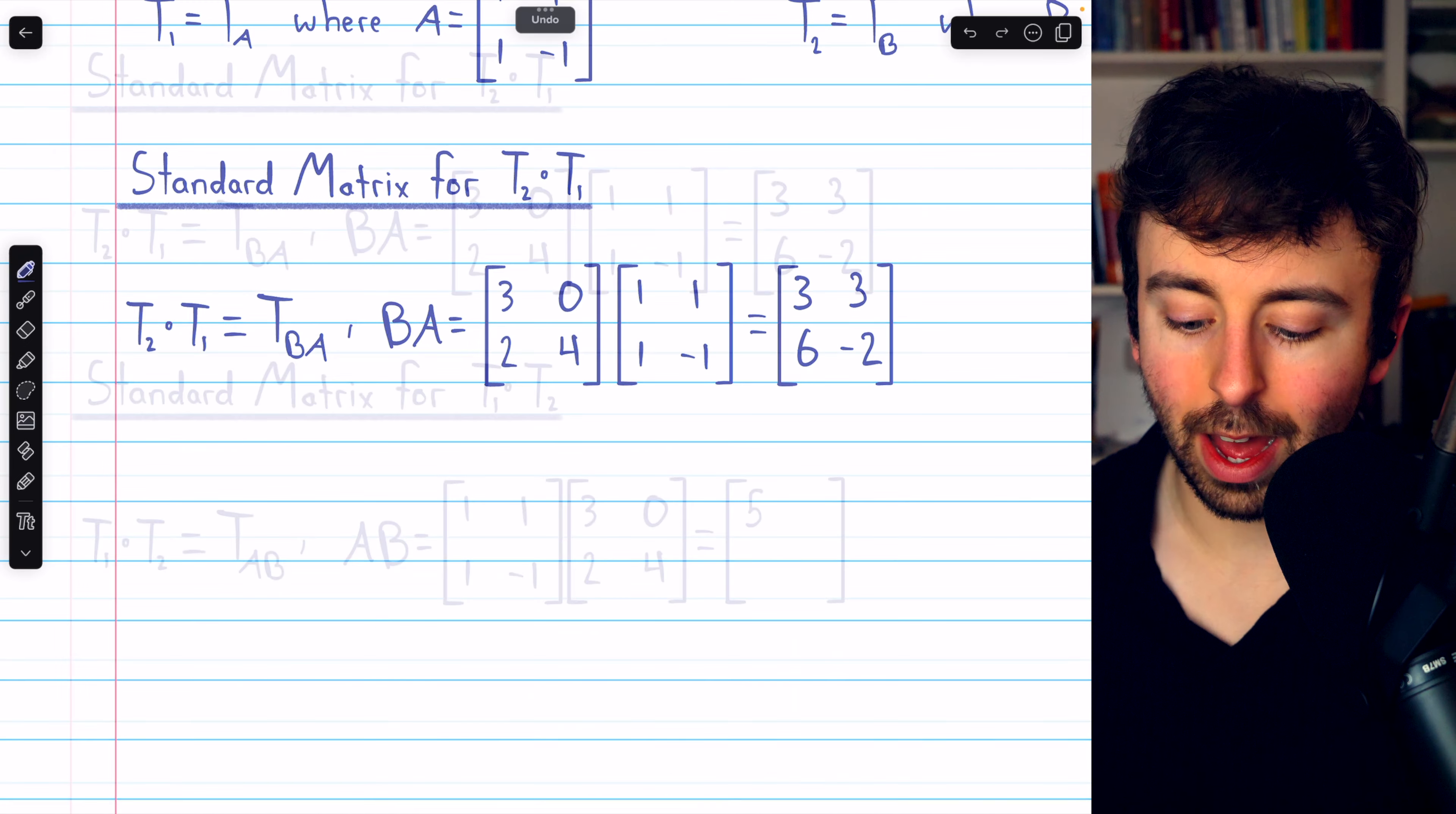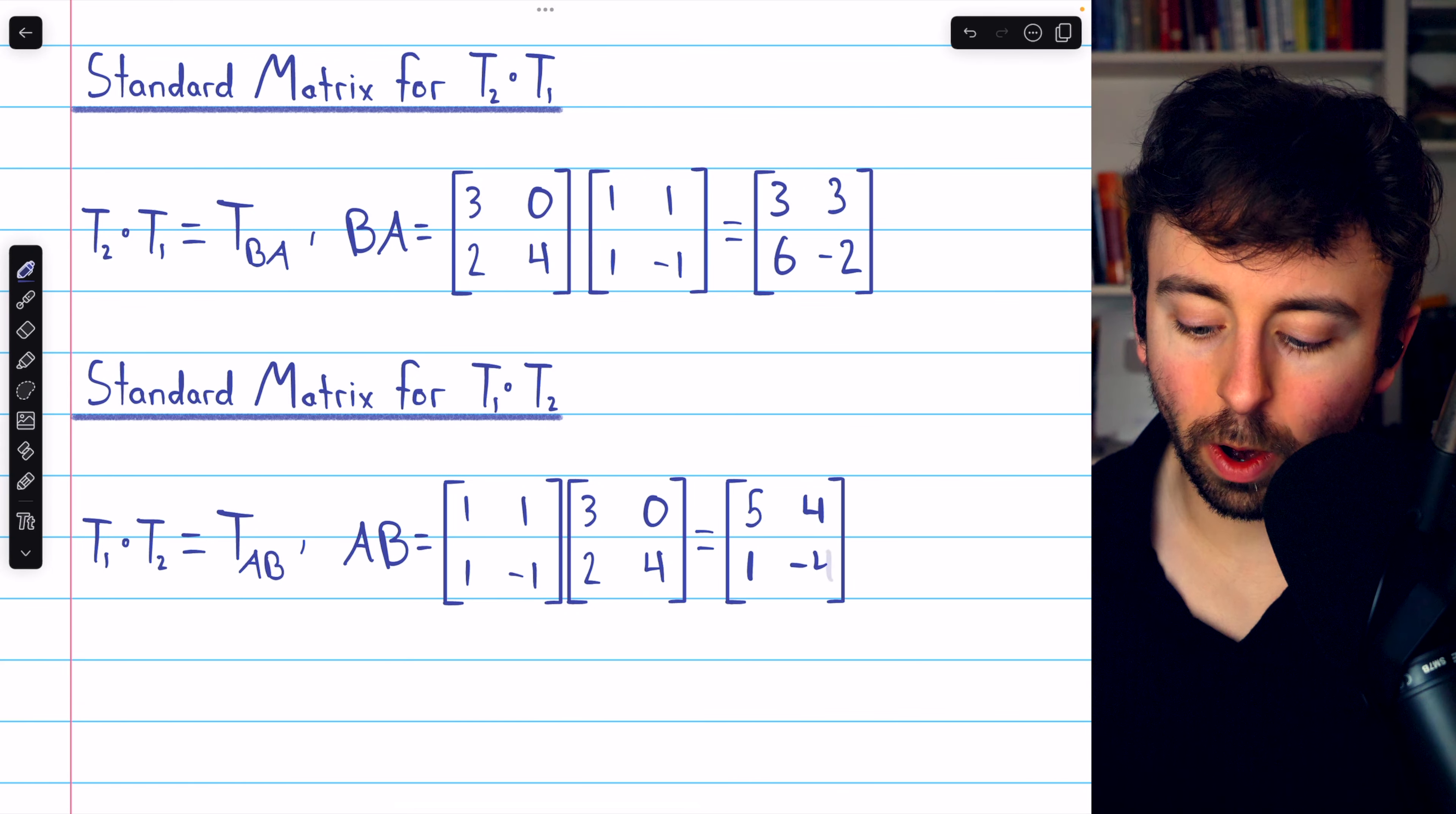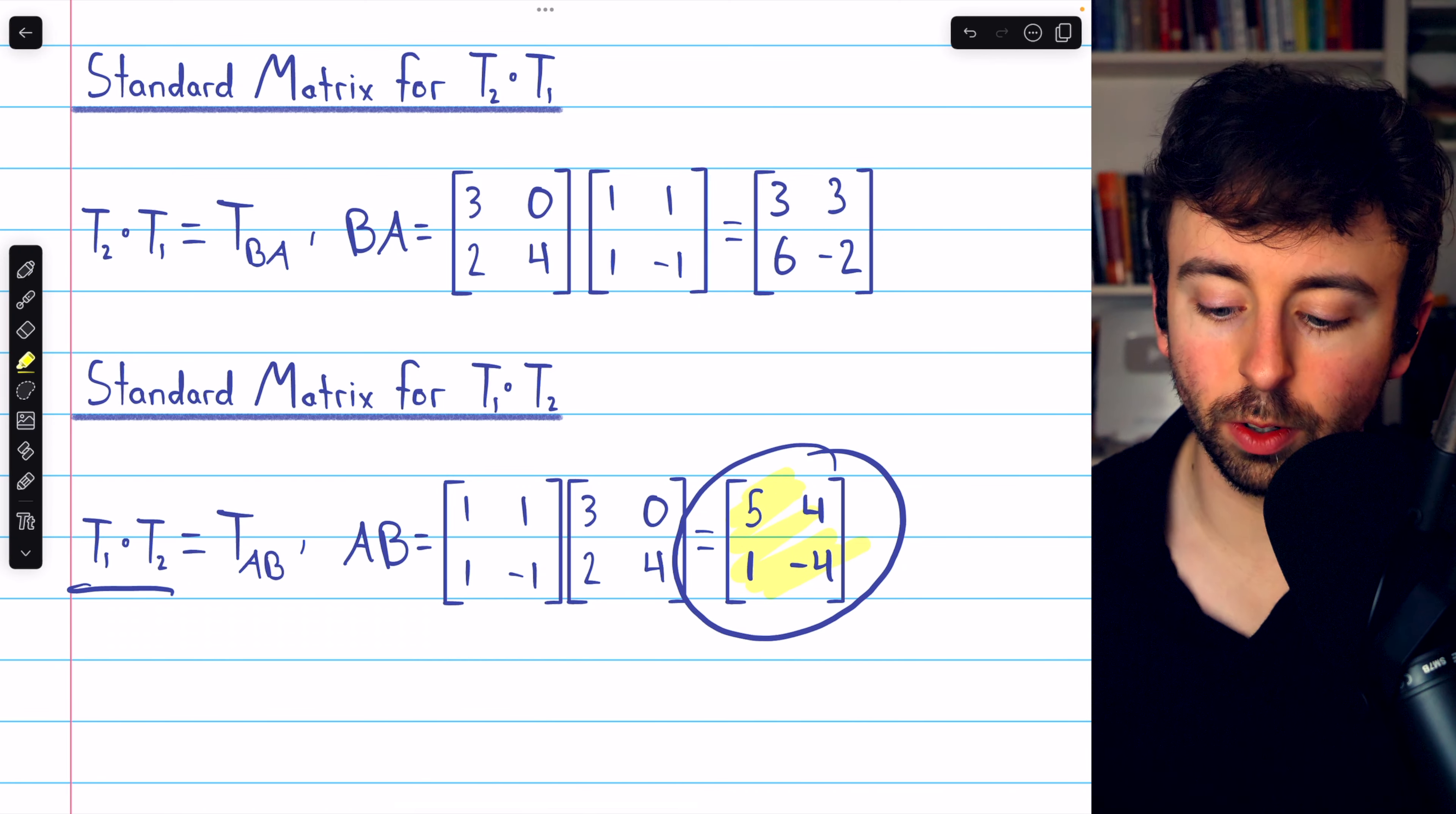So now we're doing this multiplication just in the other order. Matching this row up with this column produces 3 plus 2, or 5. And then this row with this column produces an entry of 4. Then this row with this column is 3 minus 2, so 1. And then this row with this column is negative 4. And so this is the standard matrix for the matrix transformation composition, T1 circle T2.